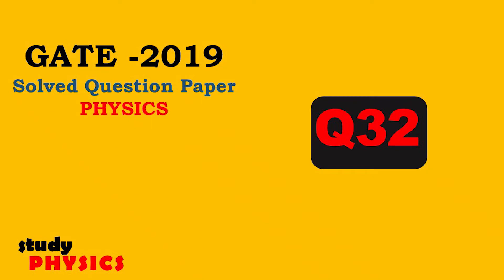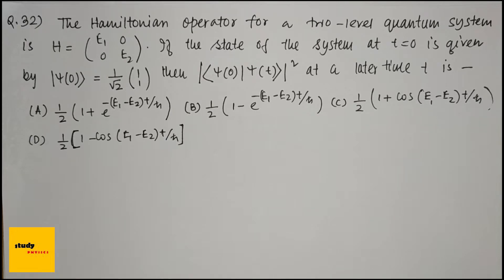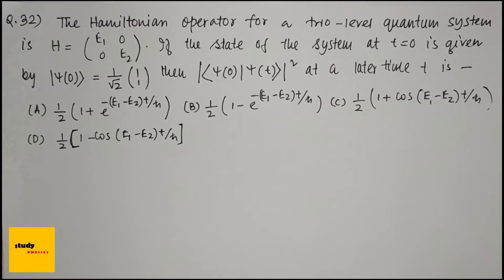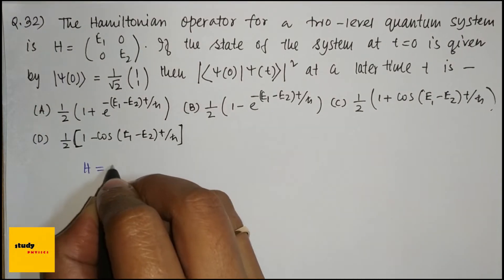Hi everyone, welcome to Study Physics. Here's question number 32. The Hamiltonian operator for a two-level quantum system is H equal to a matrix. If the state of the system at t equal to 0 is given by psi of 0 equal to 1 by root 2 times (1, 1), then |⟨ψ(0)|ψ(t)⟩|² at a later time t is — and these are the four options.